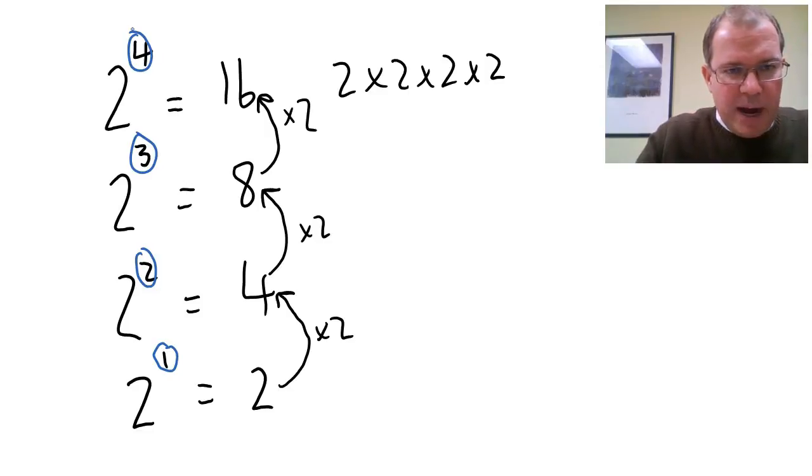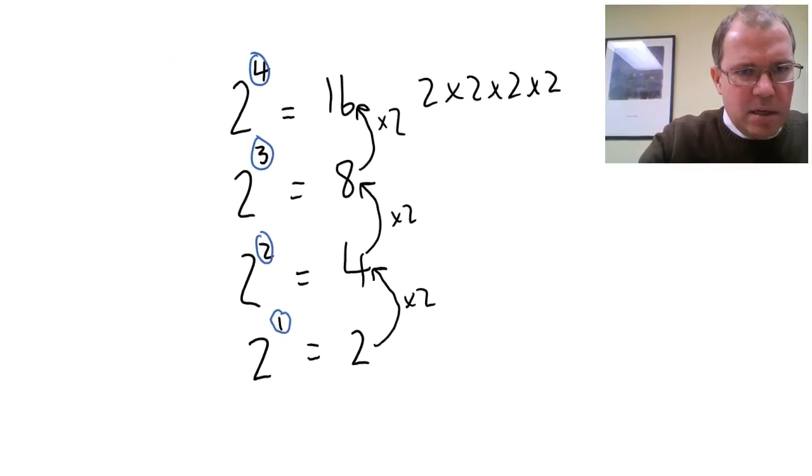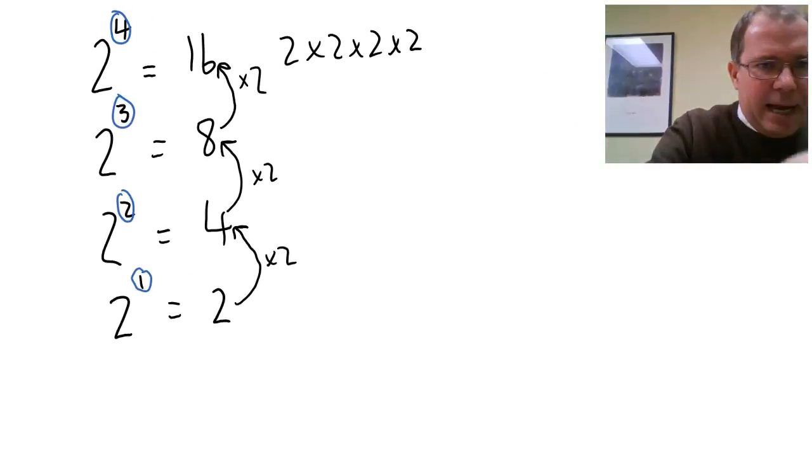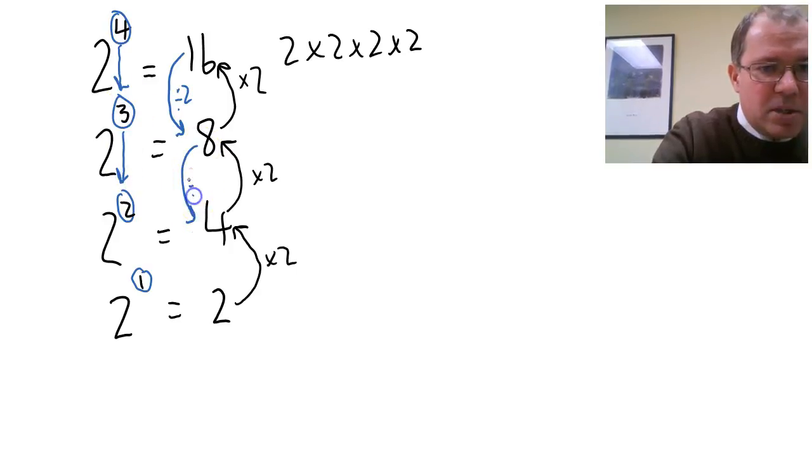But what if we go backwards? What if we consider going top to bottom? As this number decreases by 1, this actually divides by 2. As this decreases by 1 from 3 to 2, this divides by 2.